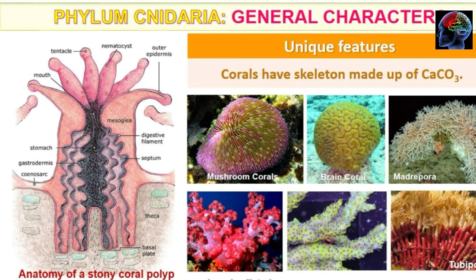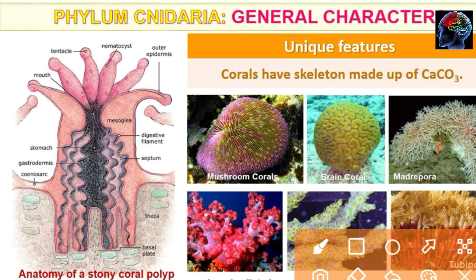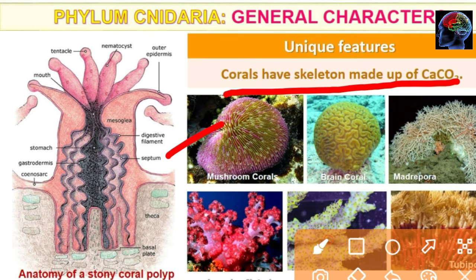The next unique feature is corals. Corals have a skeletal structure made up of calcium carbonate (CaCO3). Examples include mushroom corals and brain corals. You can find these in diagrams as well.